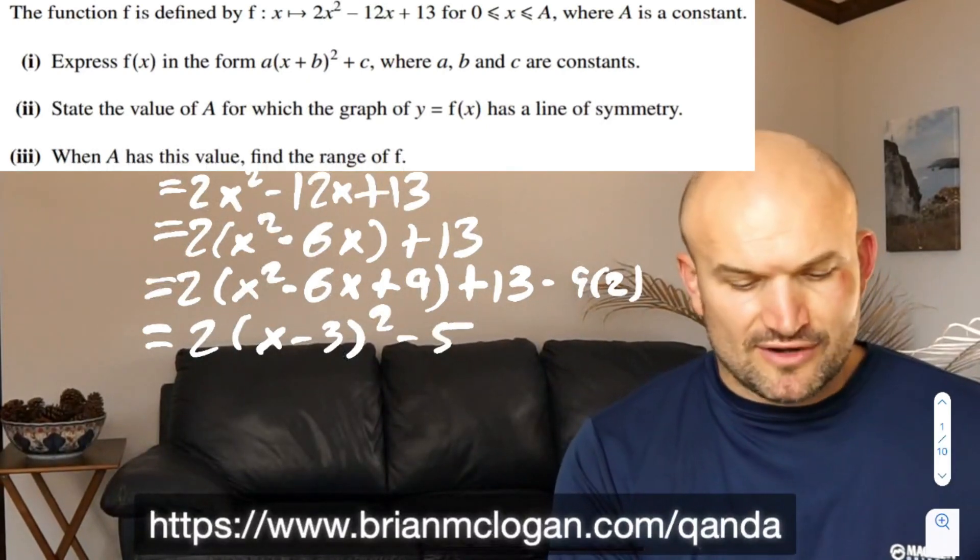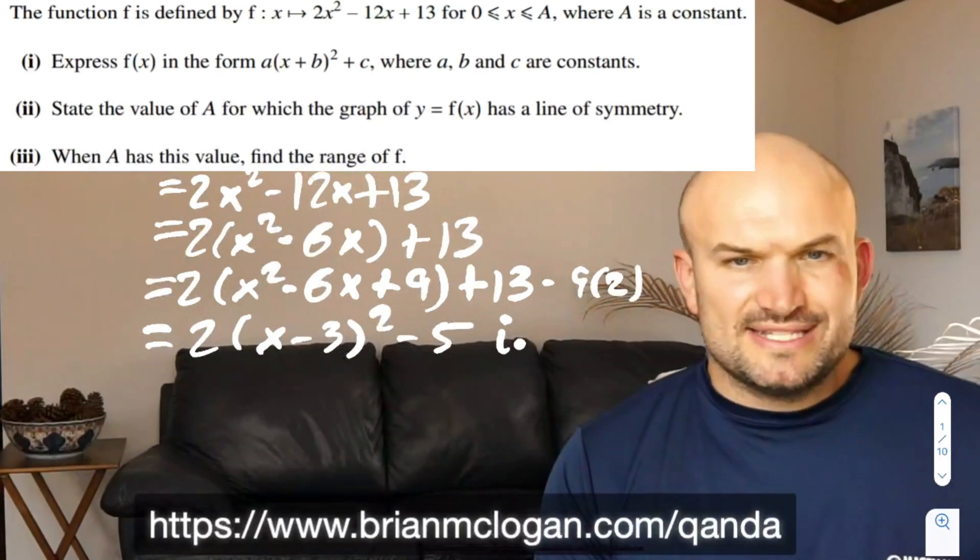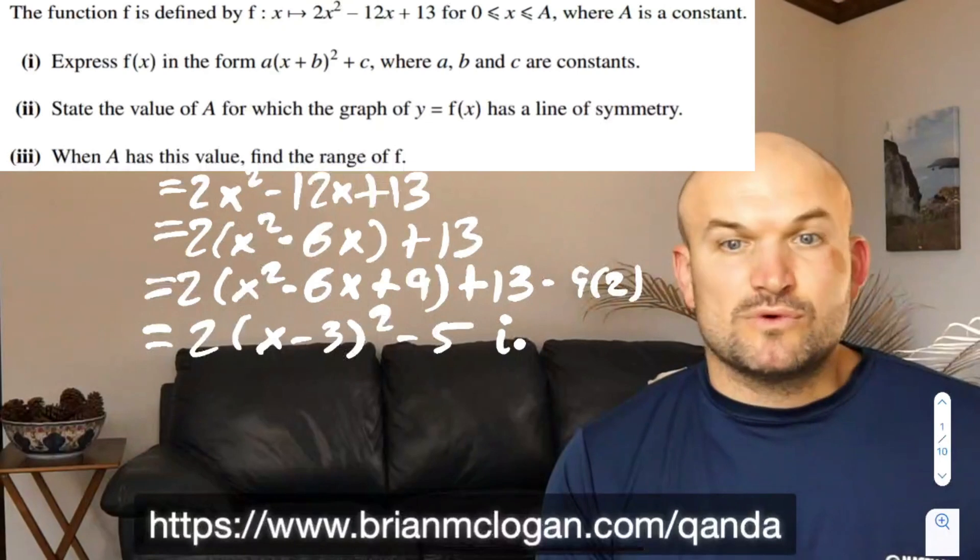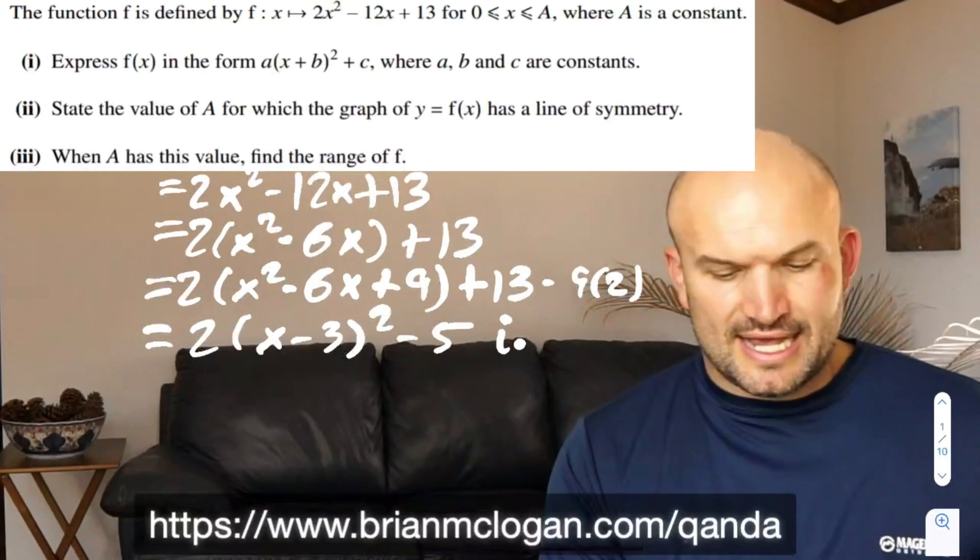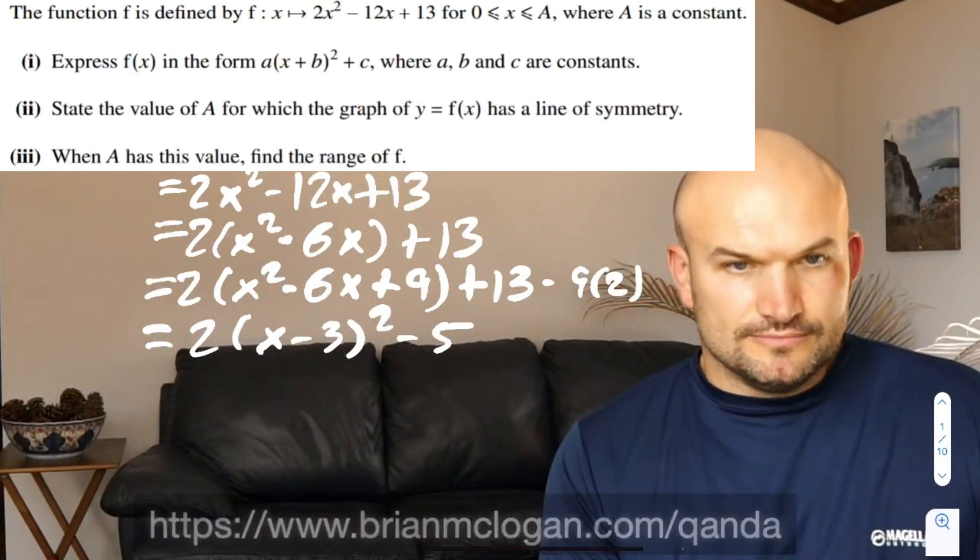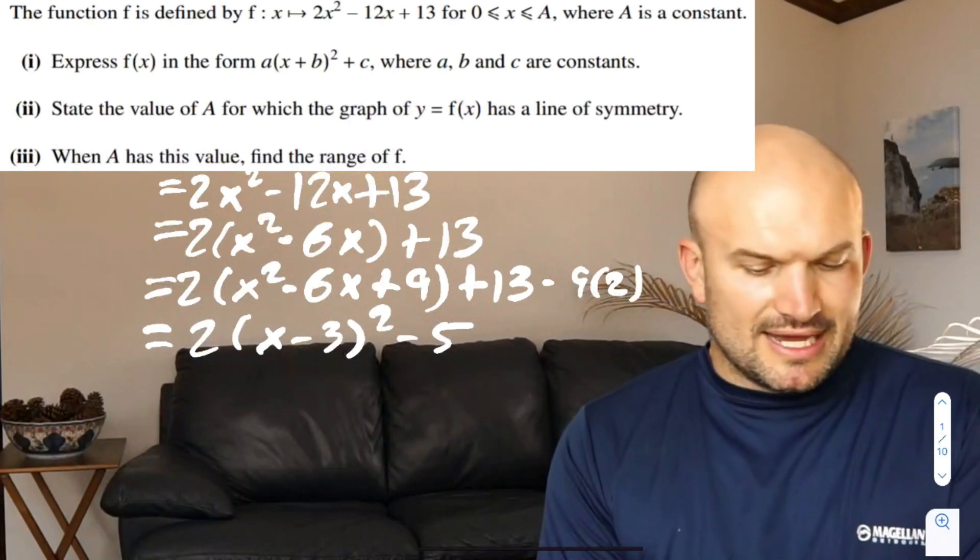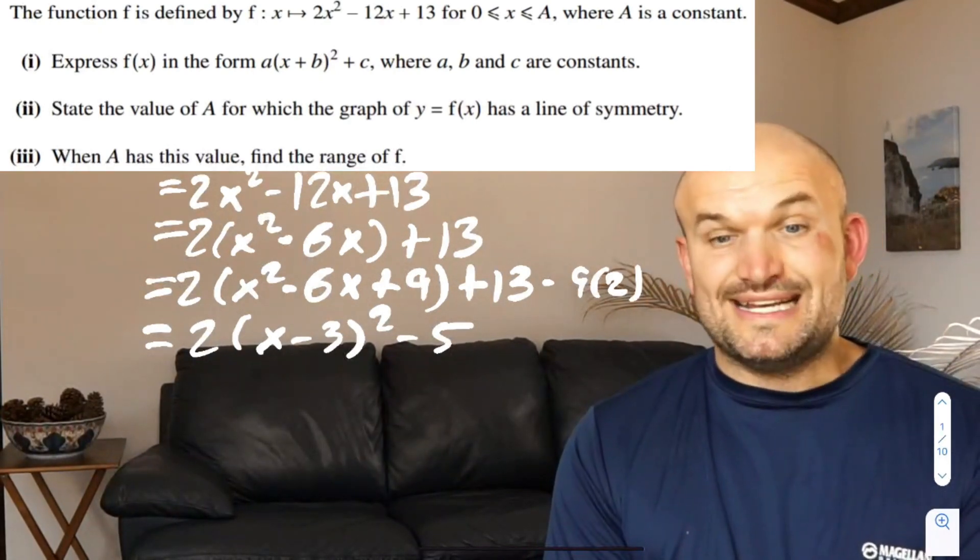So there is my vertex form. We can call this the first part. The second part is going to state the value of A for which the graph y has a line of symmetry. This is going to be a parabola. We know this is a parabola and this is our vertex form. The nice thing about having vertex form is we know the vertex here is at (3, -5).